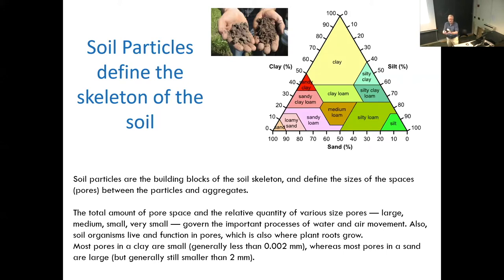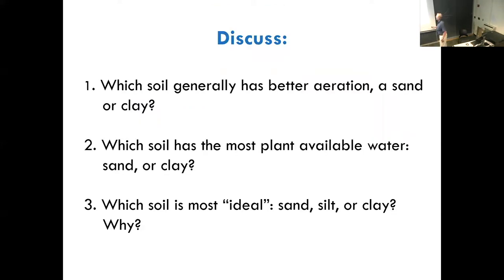If we measure organic carbon or organic matter content, which soil holds more organic matter — clay or sand? The clay, because it creates bonds between clay particles and the organic matter. So if you see a soil with organic matter of 3% and it's a clay soil, that's not so good. If it's a sandy soil, that's great. You have to interpret everything relative to the texture.